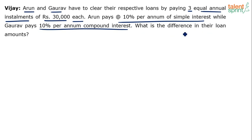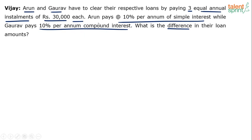The question is: what is the difference in their loan amounts? If the rate of interest were the same for both — say 10% simple interest for both — and EMIs are also the same, then both would have taken the same loan amount and the difference would be zero. But here the loan amounts will be different because one is paying at simple interest and the other at compound interest.